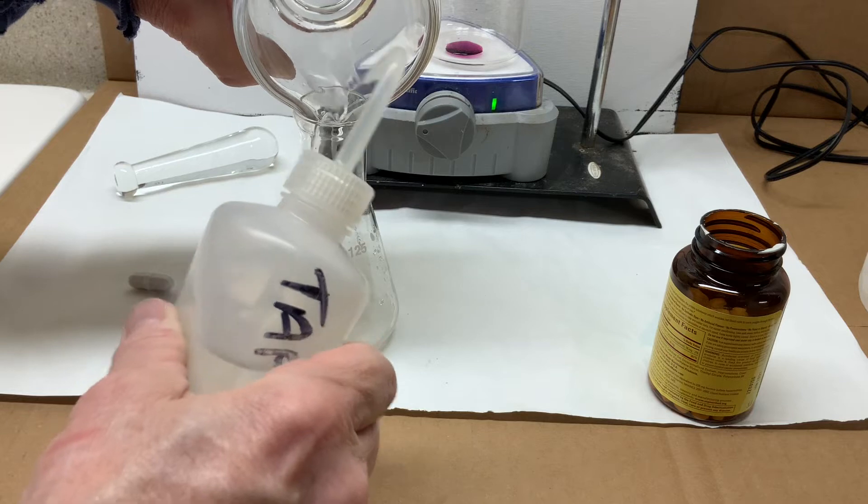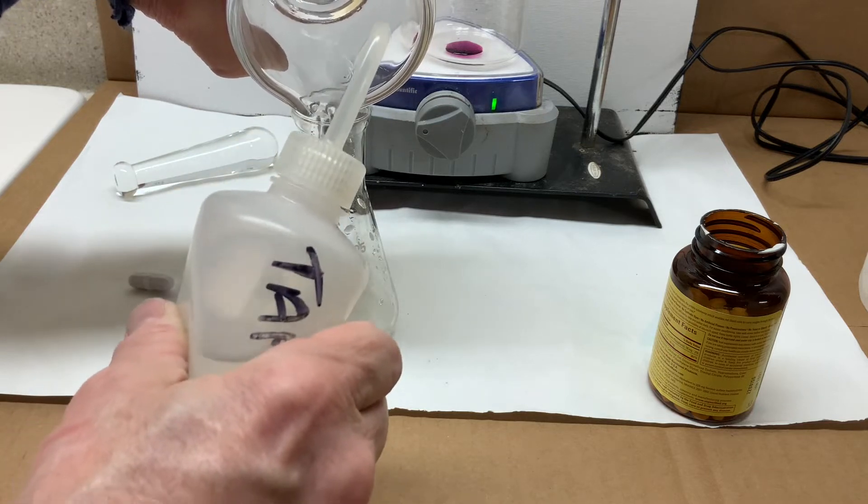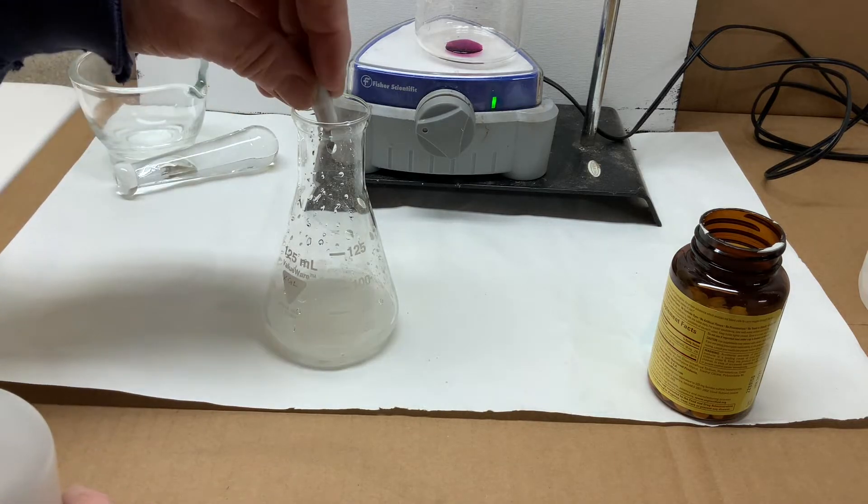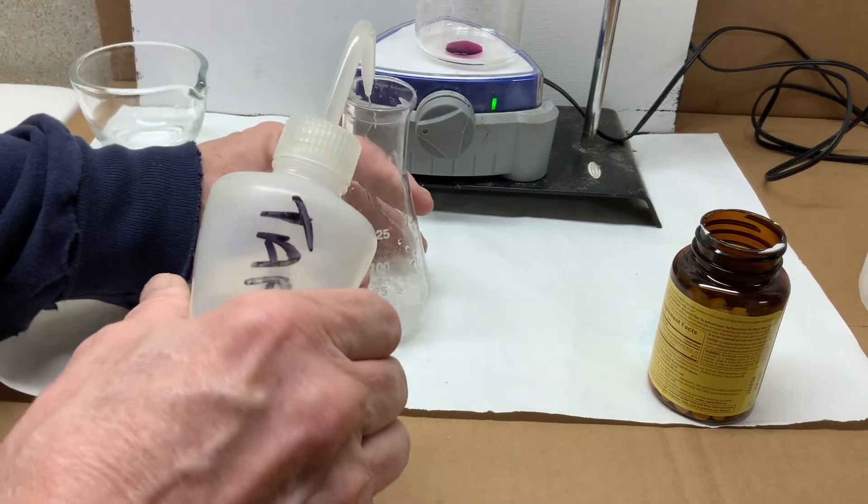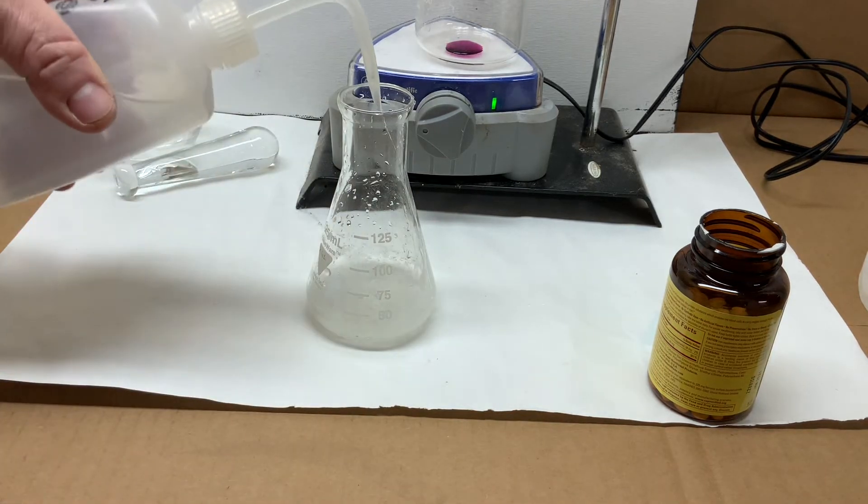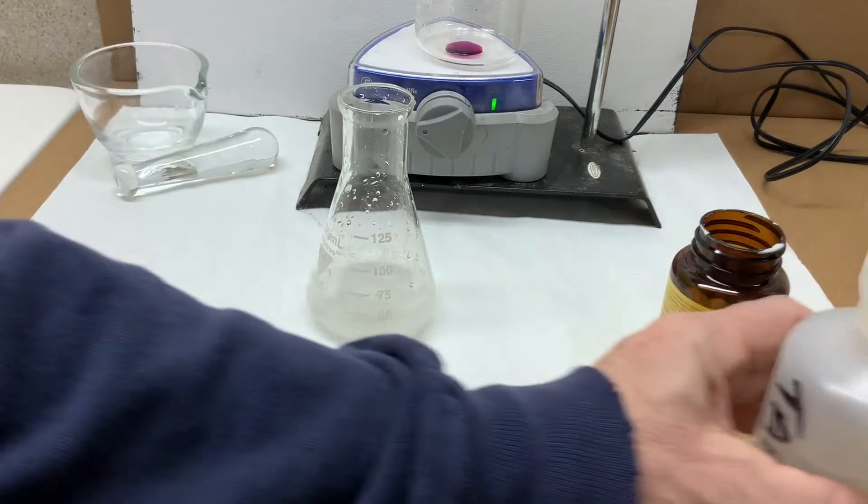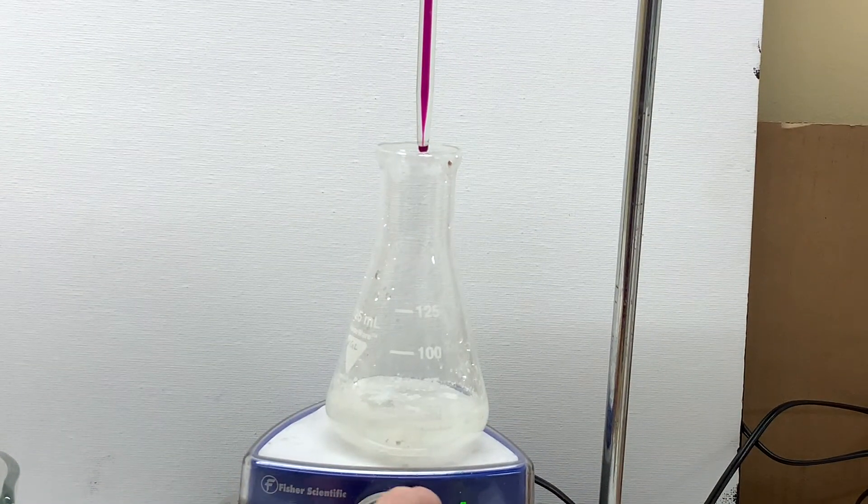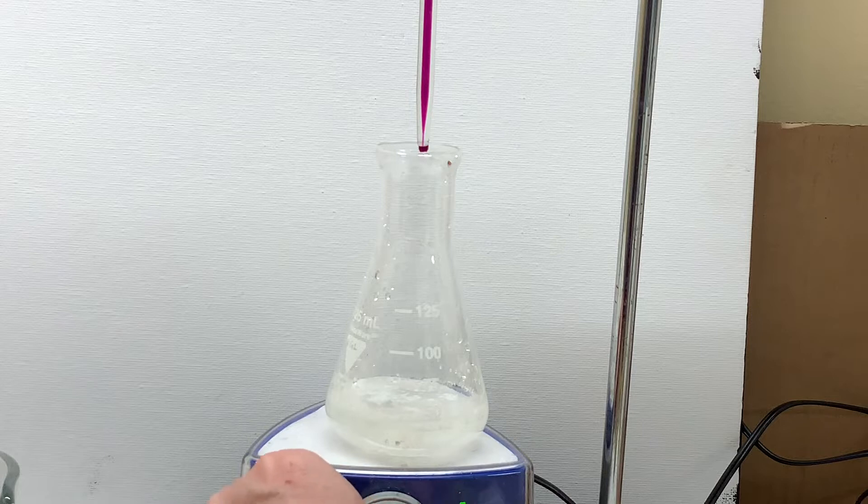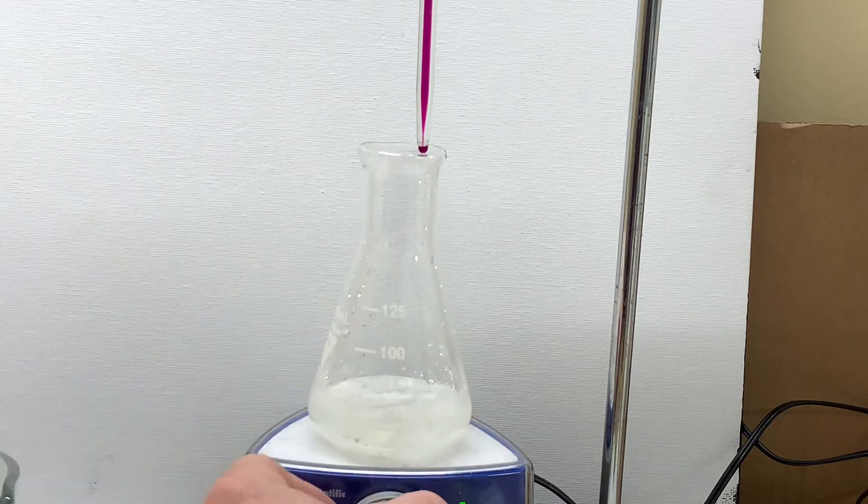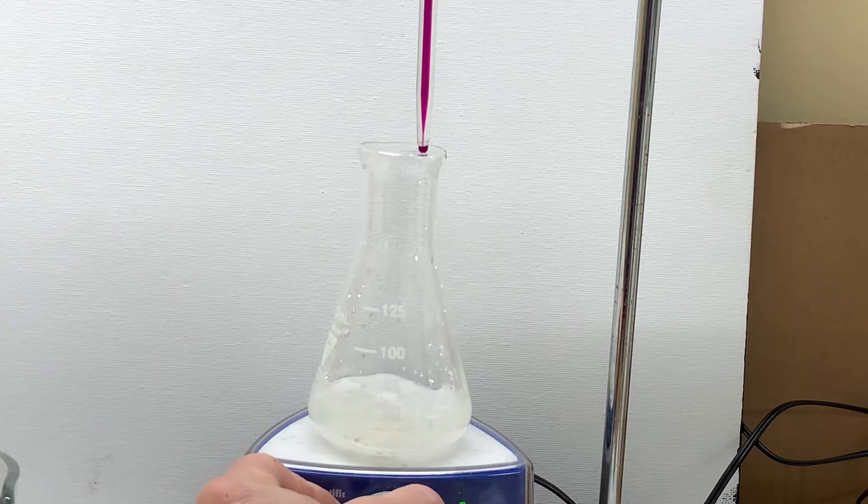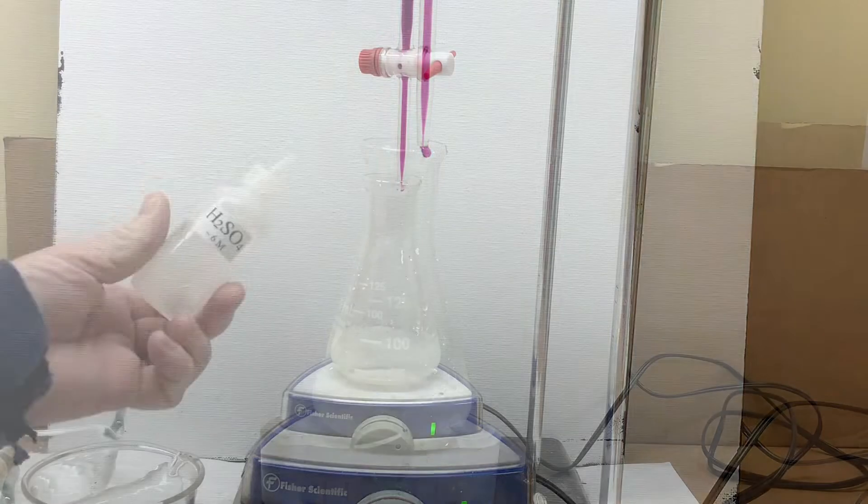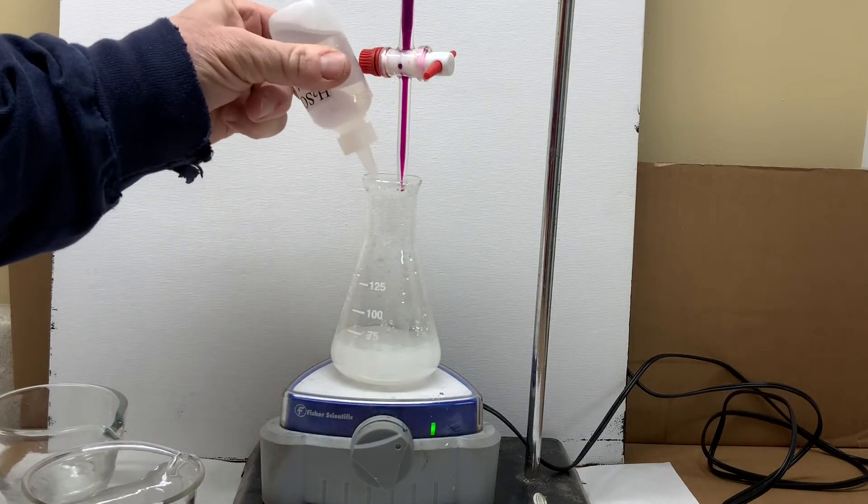Once it's all transferred the flask will be put on to the stirring plate. Don't forget to drop in the stirring bar. Add a little extra water to be sure that the stirring bar is covered, not too much but just enough to just cover. Place on to the stirring plate and adjust the location of the flask so that the stirring bar can twirl in the center of the flask and then move the stirring plate so that it's lined up under your burette.